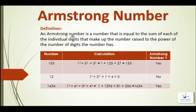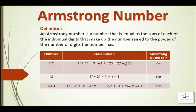An Armstrong number is a number that is equal to the sum of each of the individual digits that make up the number, raised to the power of the number of digits the number has. For example, 153 has 3 digits, so 1³ + 5³ + 3³ = 1 + 125 + 27 = 153, which equals the original number. So if the result of this calculation equals the original number, then that number is an Armstrong number.